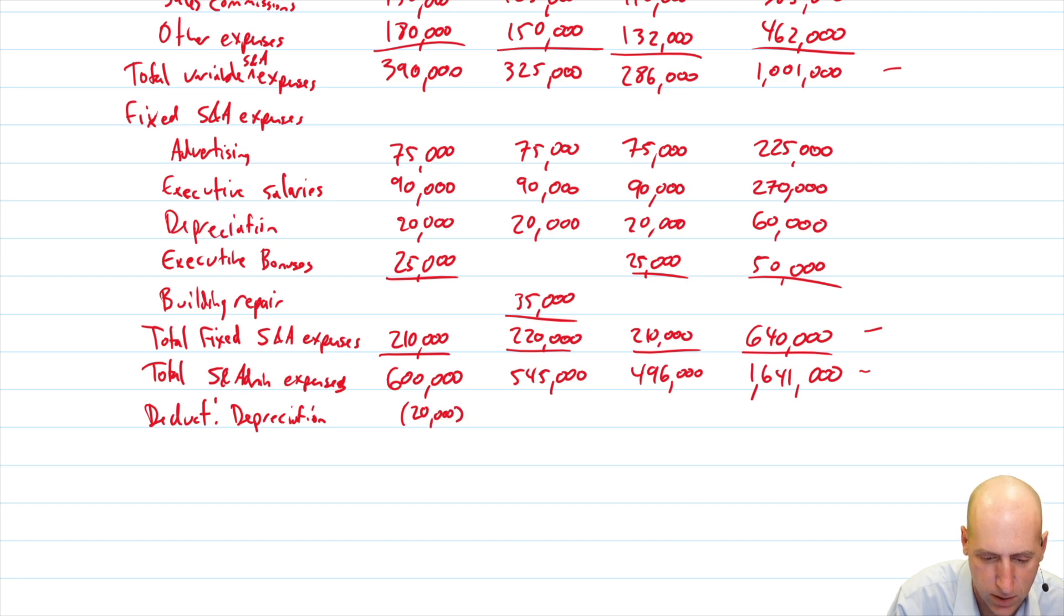So, that's why we back it out. We say, okay, there's no cash being paid for this expense. That's deduct 20,000, deduct 20,000, deduct 20,000, and that's 60 in total. So, 600 minus 20, 580.